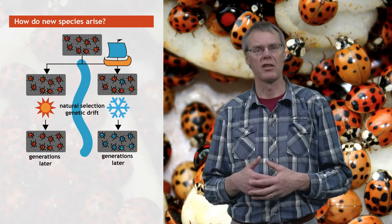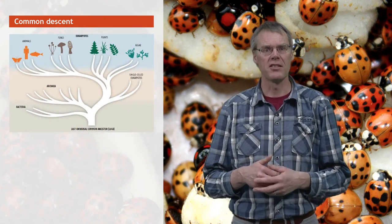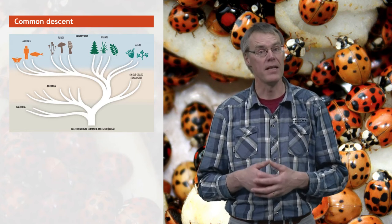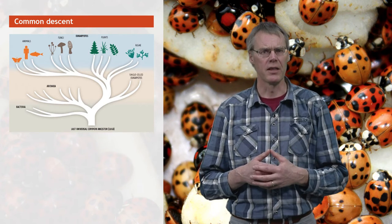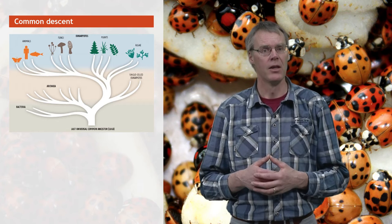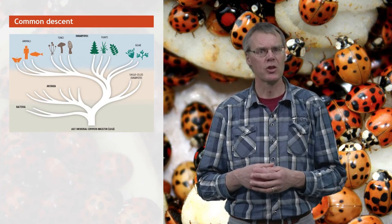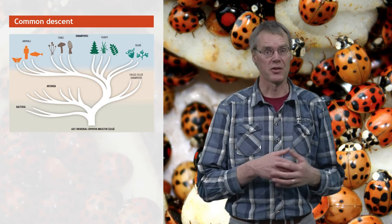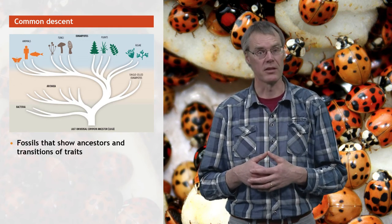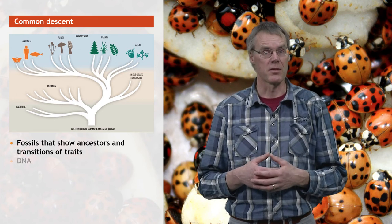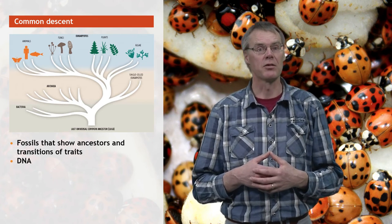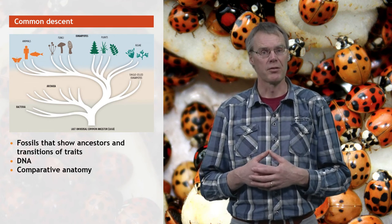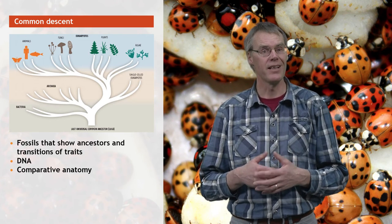Finally, I want to discuss another evolutionary concept: the overarching idea of common descent — the idea that all living things on Earth are related, having descended from a common ancestor through descent with modification over many, many generations. Common descent is not a directly observable fact, since we have no way of going back in time. Instead, it is a conclusion based on a massive collection of facts found independently in the study of fossils showing ancestors and trait transitions over long time series, in the genetics of organisms — almost all of which use DNA as the carrier of life's information — and in comparative anatomy, which shows that morphologically different organisms share internal anatomy.